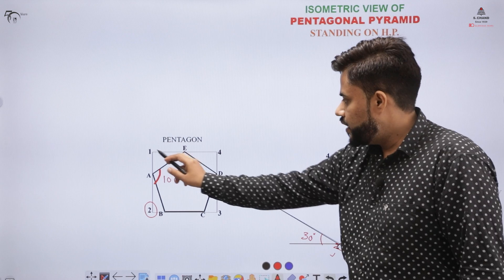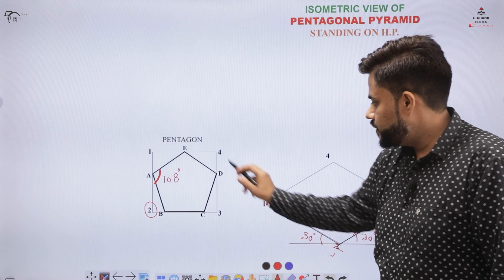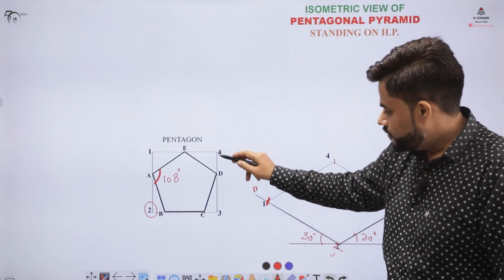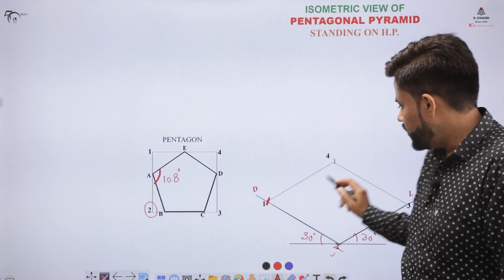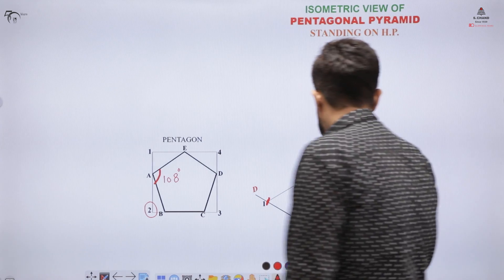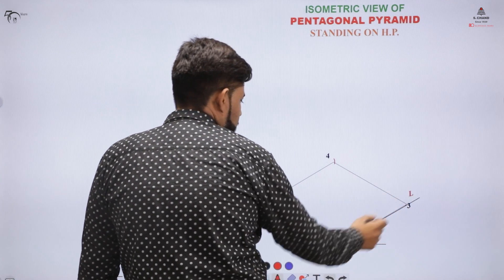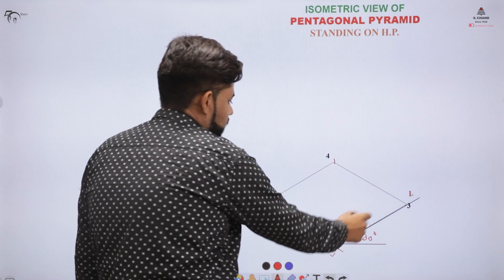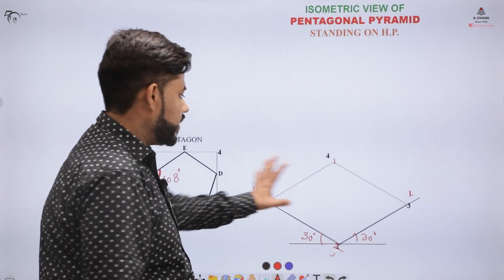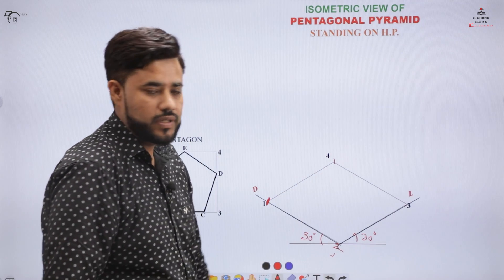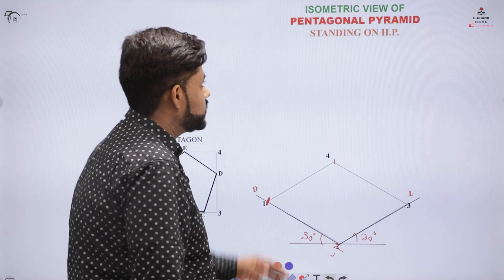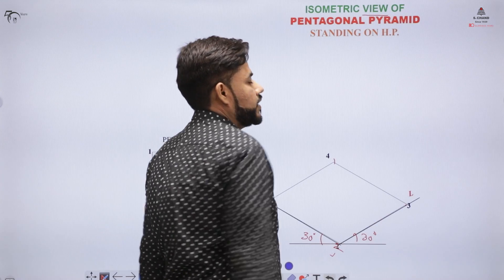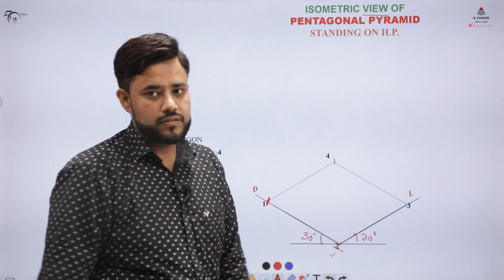So from point one, open the compass, mark the distance, and cut it. From four to three, mark the distance and cut it. This box is created of similar length because we are making isometric views, not isometric projections.